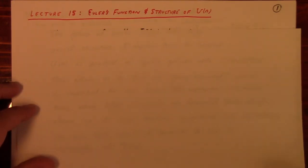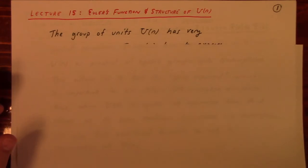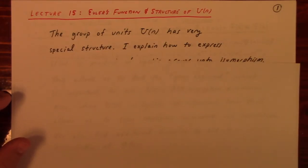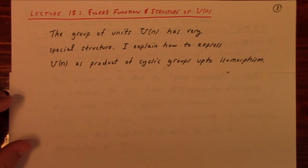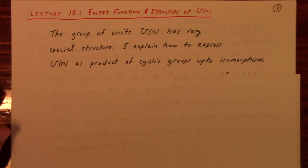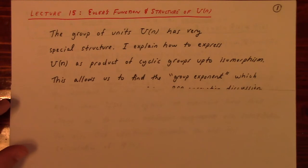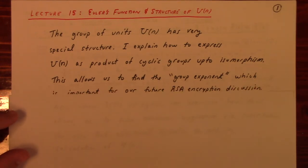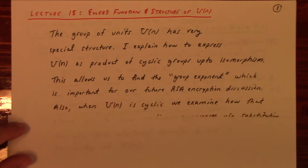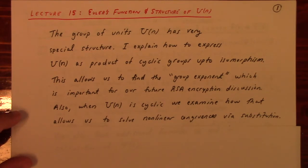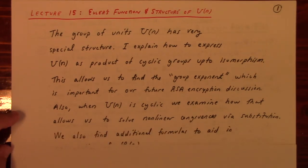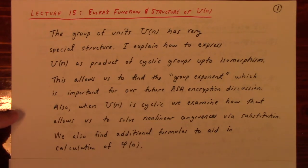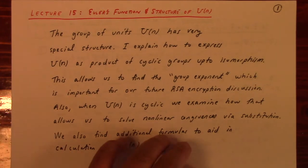Welcome to lecture 15 on Euler's function and the structure of U_N. We're going to discuss the group of units in U_N and its special structure. I'll explain how to express U_N as a product of cyclic groups up to isomorphism. This will allow us to find the group exponent, which is important for our future study of RSA encryption, and also examine how to solve certain nonlinear congruences via substitution.